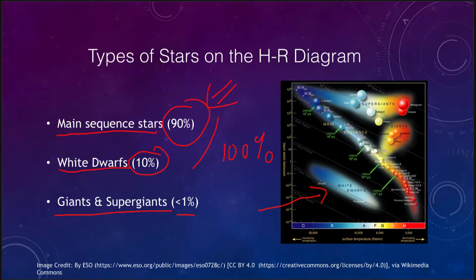There are a very small percentage of stars as giants and super giants in the HR diagram. However, these are the ones that we can see over vast distances — they are so large and so bright that we can see them even over very great distances.